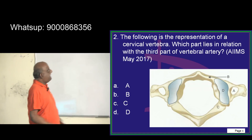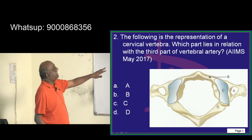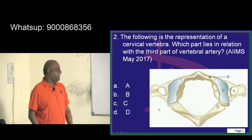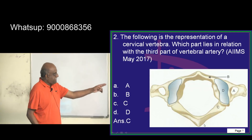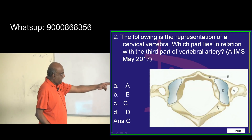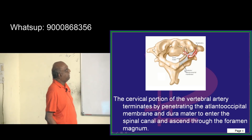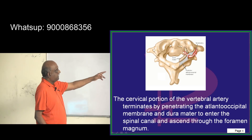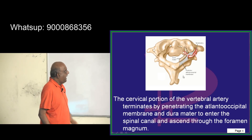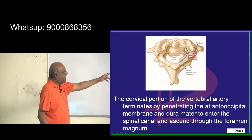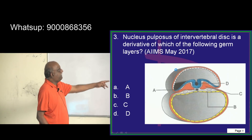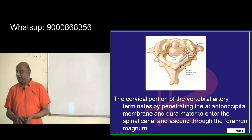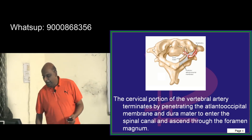Now in the cervical vertebra, which part lies in relationship with the third part of the vertebral artery is what you have to be emphatically sure. It is this part labeled as C. If you look at the structure, this is the foramen transversarium in the cervical vertebra, and this is the typical area where the third part of the vertebral artery will be passing in relationship to this part of the cervical vertebral spine — that is what you need to remember anatomically.